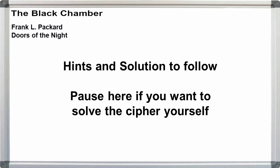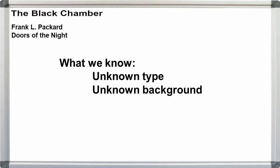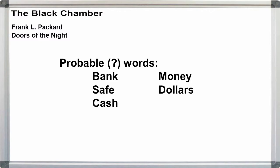Pause here if you want to try solving this cipher on your own. We have no background on the cipher, and we don't have any realistic probable words to work with at this point. We know that the message is between gang members, and we might be able to guess at the kinds of crimes they could be discussing. Along with everything random, we might try bank, safe, cash, money, or dollars.